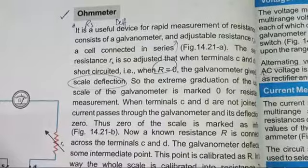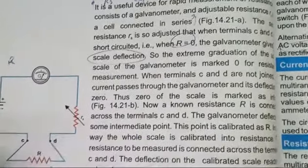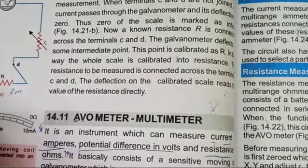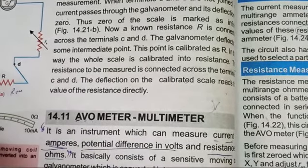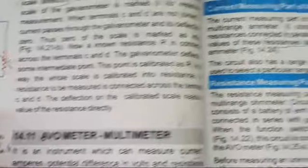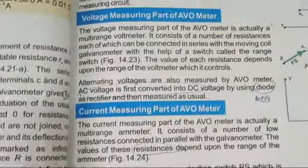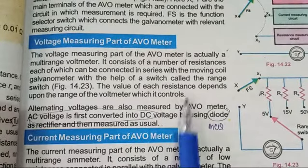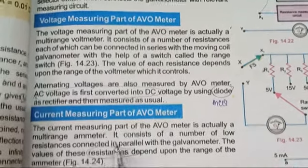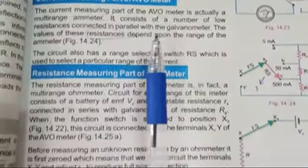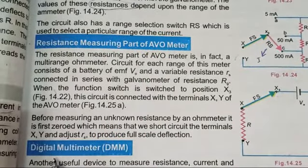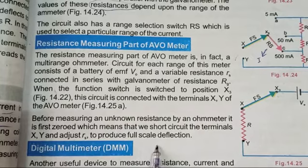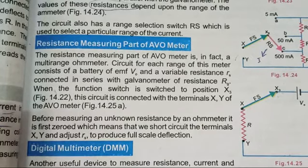Finally, define ohmmeter and draw its circuit diagram. Last ones are the AVO meter and multimeter — different parts may be asked: the voltage wiring part of the AVO meter, the current wiring part, the resistance wiring part, or the digital multimeter (DMM), which is the best one. With DMM, there are no chances of human error.